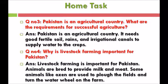Question 3: Pakistan is an agricultural country. What are the requirements for successful agriculture? Answer: Pakistan is an agricultural country. It needs good fertile soil, rains, and irrigation canals to supply water to the crops.